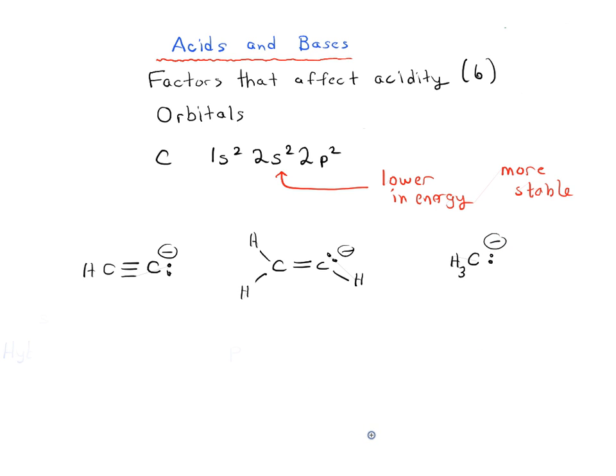And these are all the conjugate bases of an alkyne, an alkene, and an alkane. And recall what the hybridization of this carbon is right here. This is an sp hybridized carbon. And this carbon here is sp2, and this carbon here is sp3.